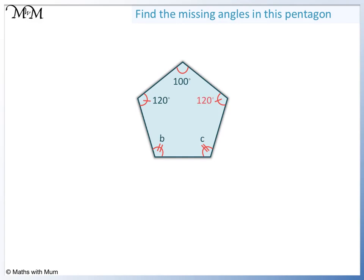Next we will find B and C. We know that they are both the same. So we will start by adding up the angles that we know, and then subtract them from 540 degrees. 120 plus 120 equals 240. Plus 100 equals 340.